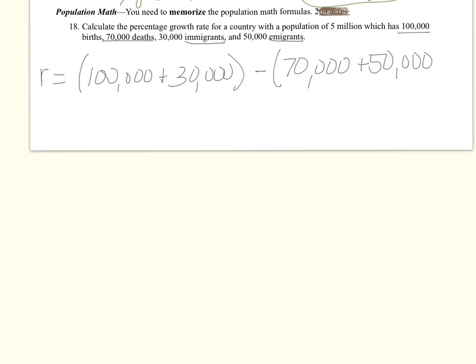So now we're moving on to number 18 with population math. You need to go back to your binders and pull out your population math formulas and review the formulas. We need to calculate growth rate. If you go back to the formulas, R is going to equal the births plus the immigrants. So our births are 100,000 plus people coming in, that's immigrant with an I. This is minus our deaths, which is 70,000, plus people leaving with an E, emigrant with an E.